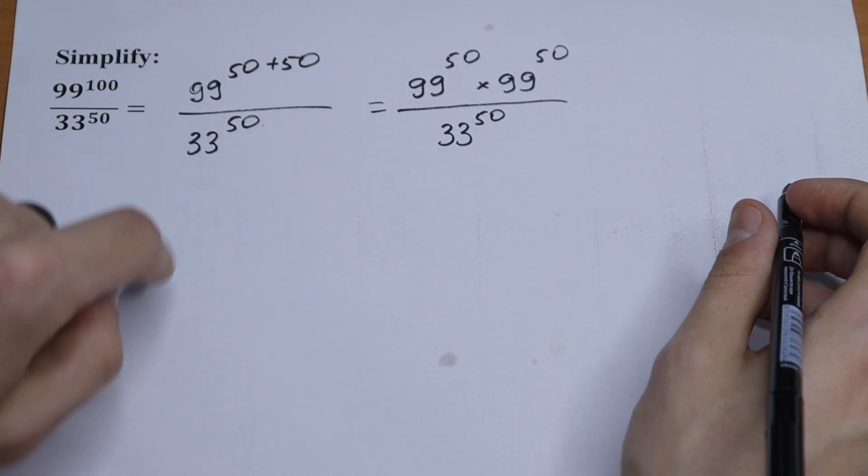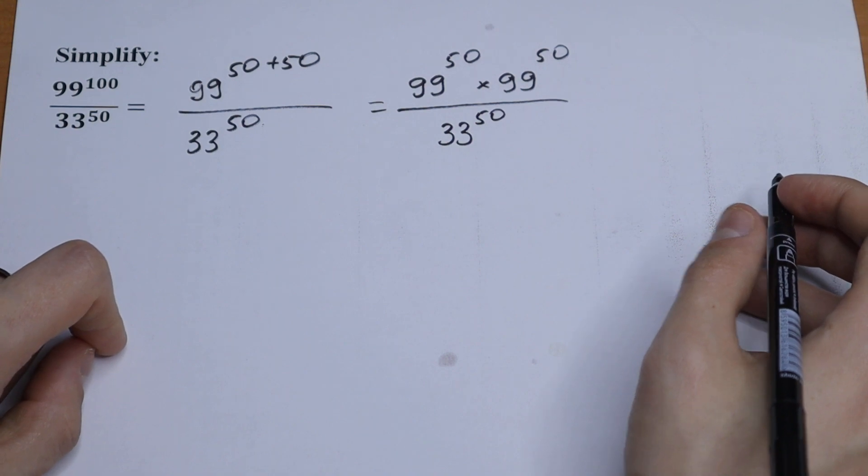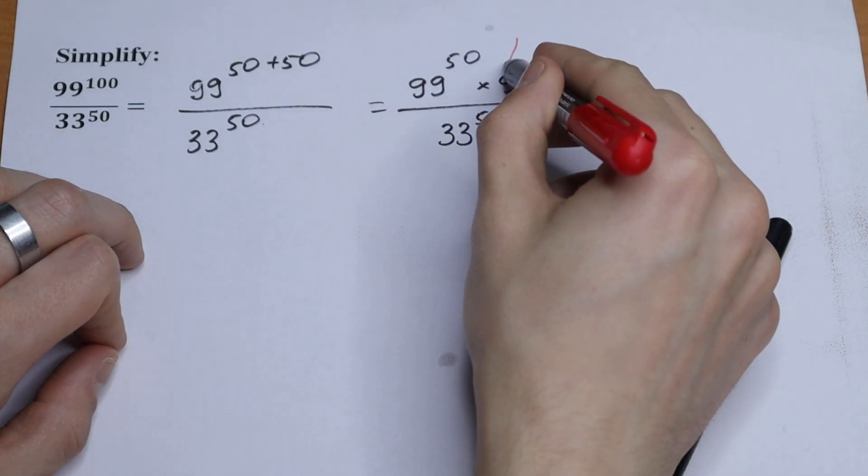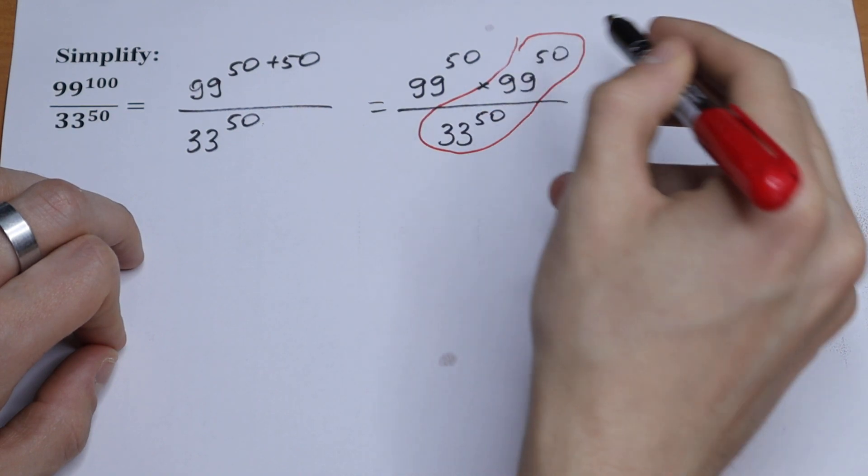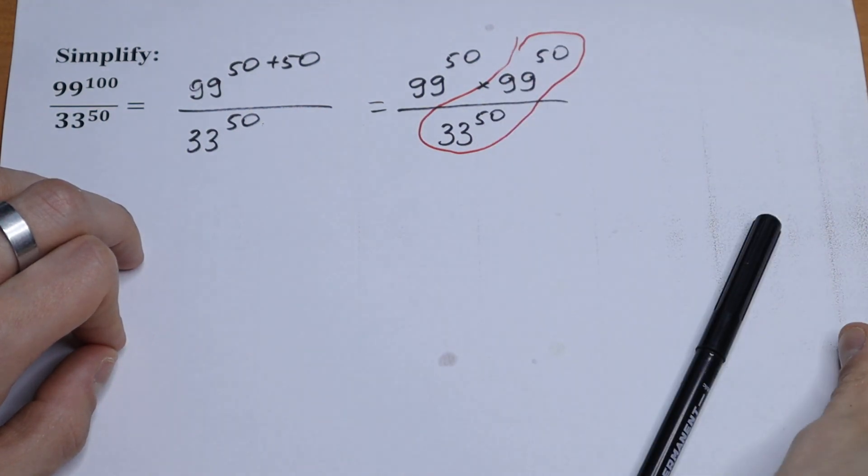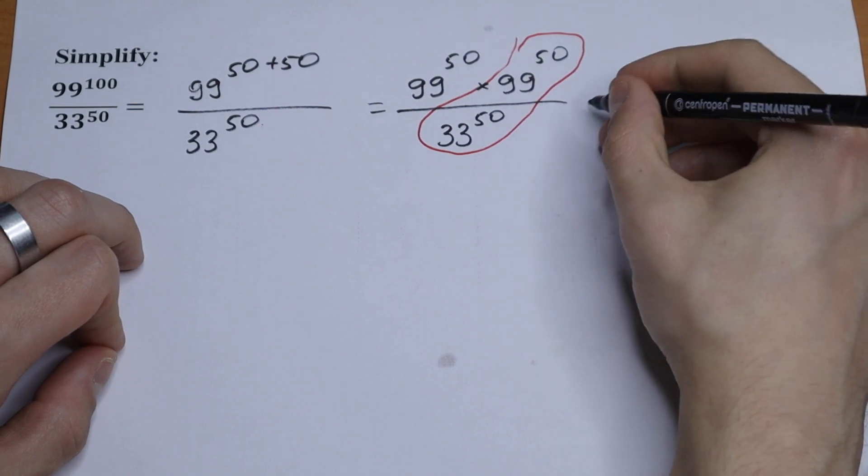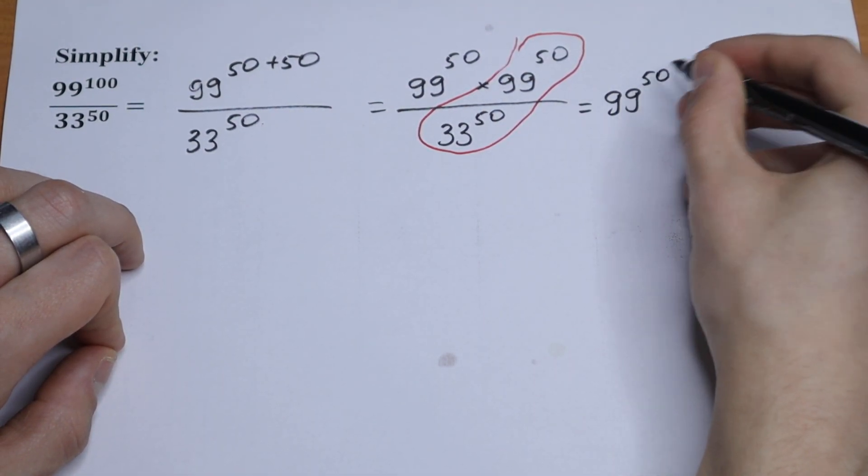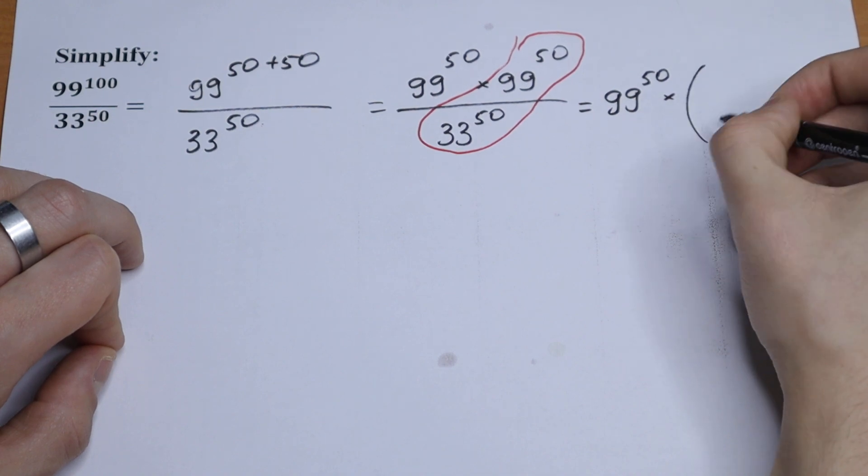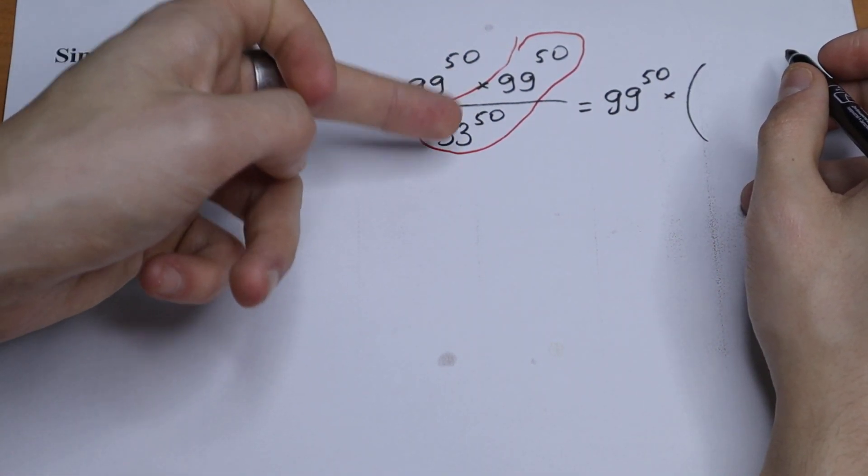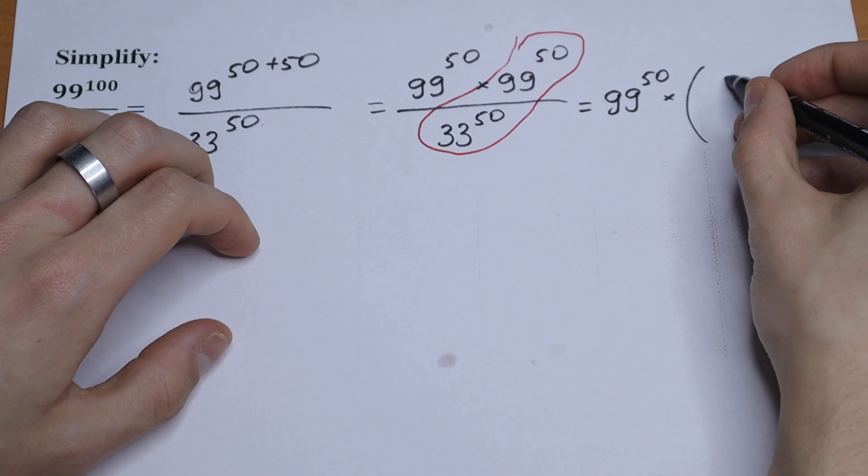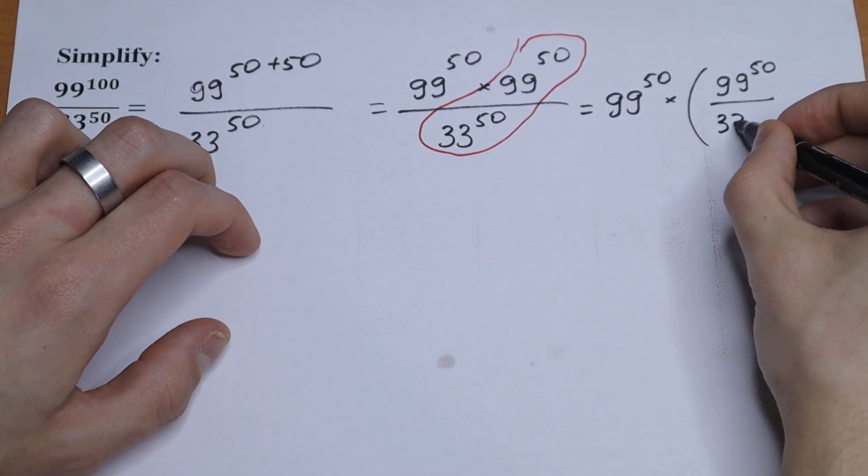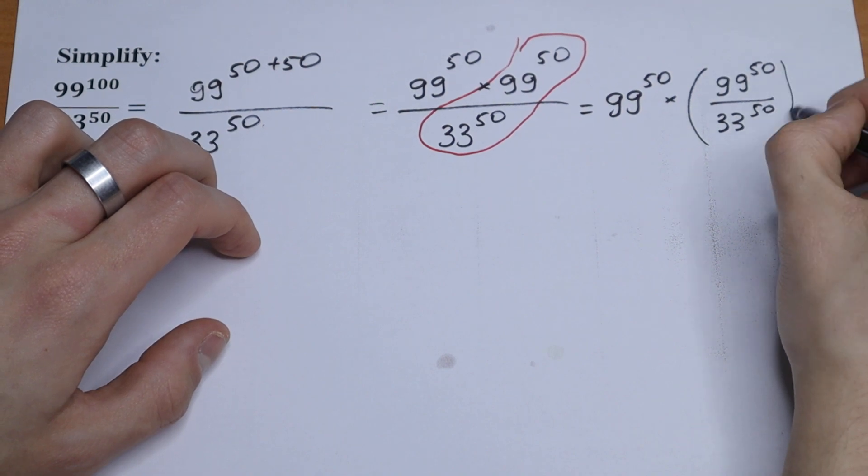So we just simplify this using this rule. So what we are going to do next? Let's group these 33 and 99, these two values with this power 50. As a result we will have 99 to the power 50 times this grouping. We can do this because this is a product, so nothing changes if we group this. We will have 99 to the power 50 all over 33 to the power 50.